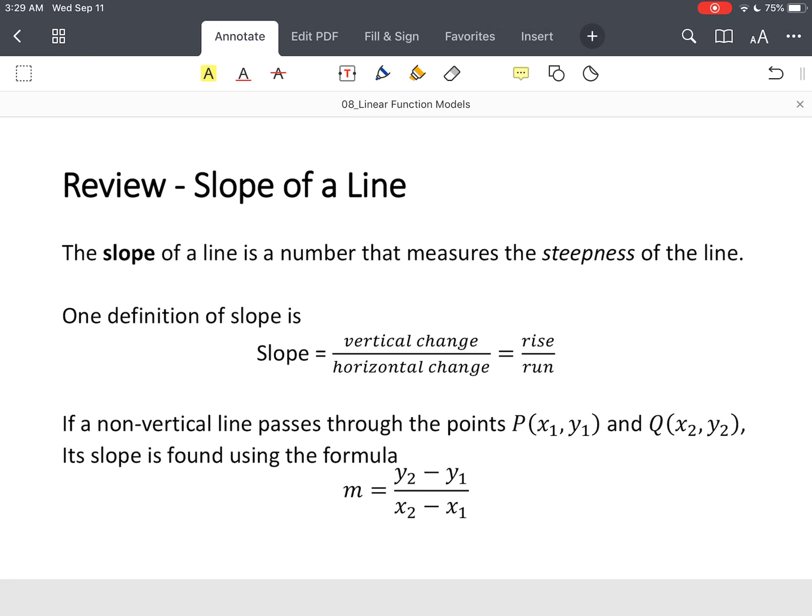You've got a couple different ways to represent slope. So one definition of slope is the vertical change over the horizontal change, also known as the rise over the run.